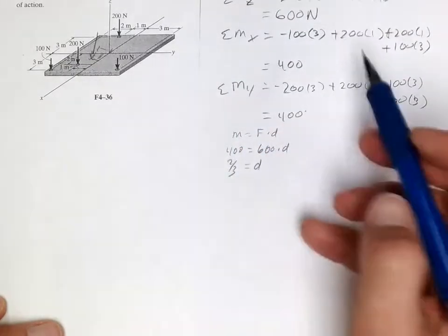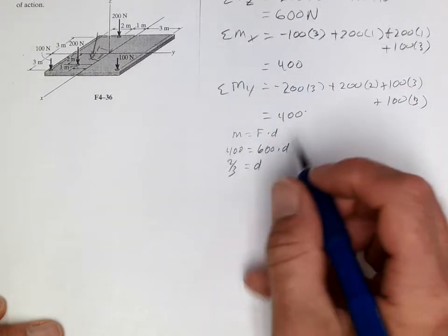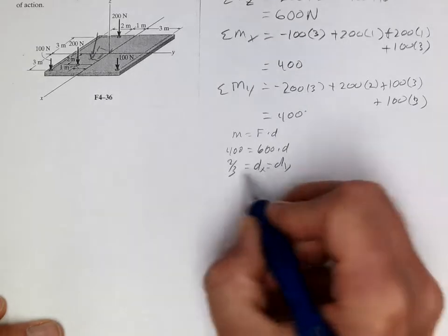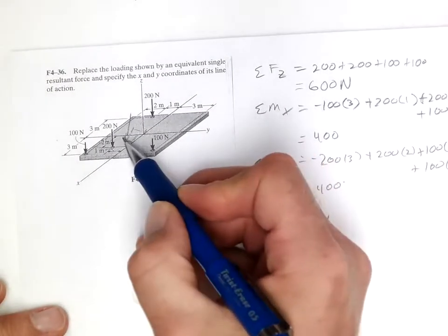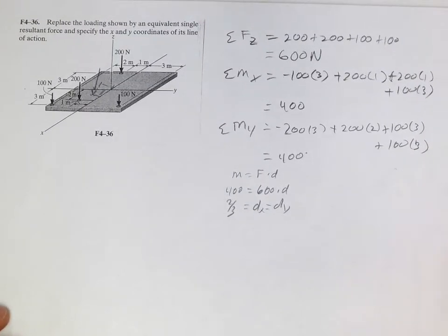And then in the y, we had the same moment, so it's going to cause the same thing. So d in the x and d in the y will be equal, and they'll both be 2 thirds. It will be in the negative y-direction and the positive x-direction, and that gives us our point.